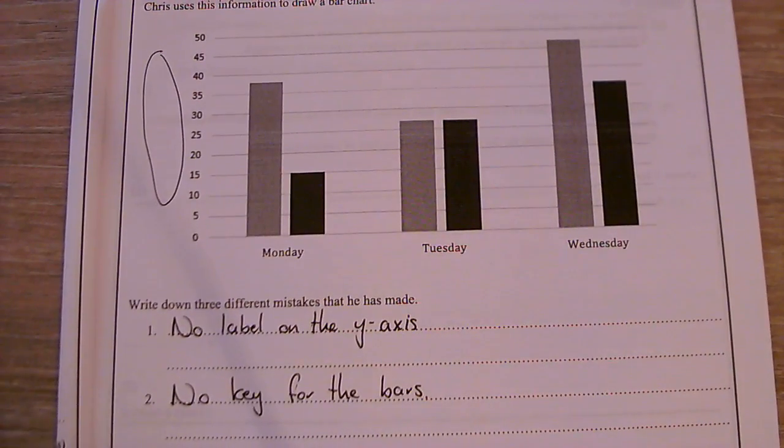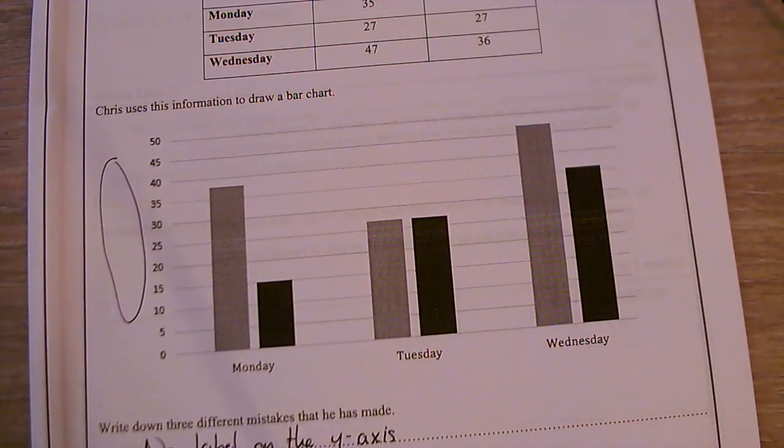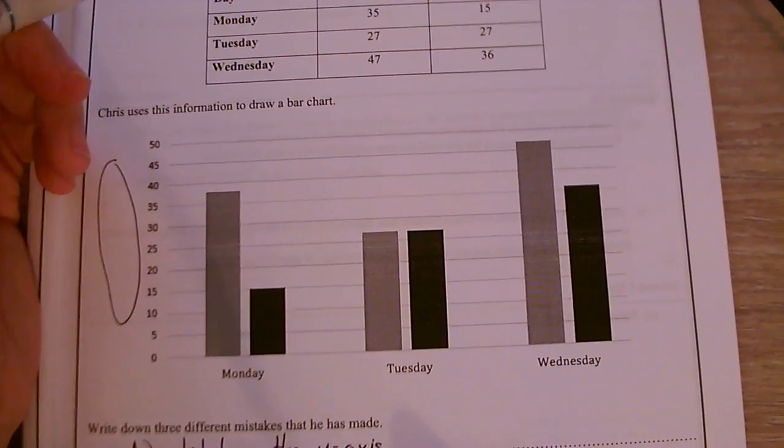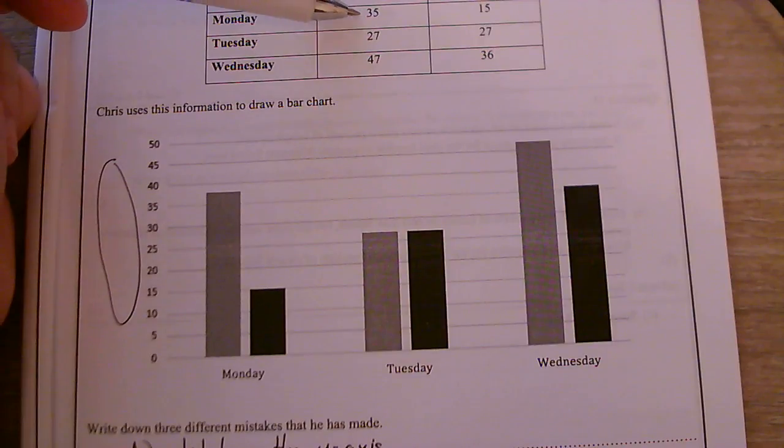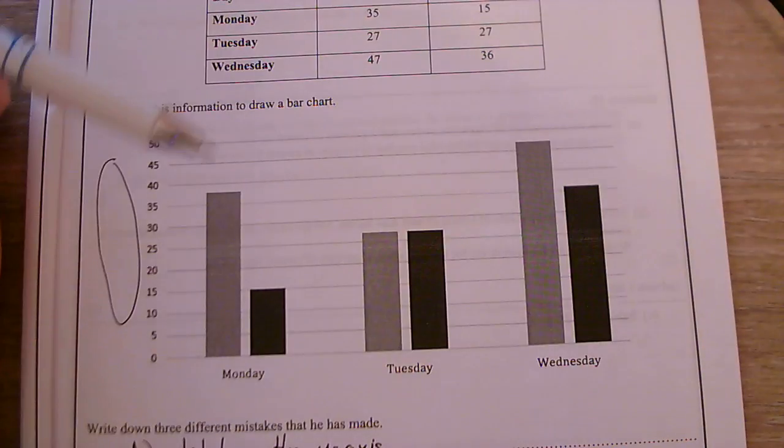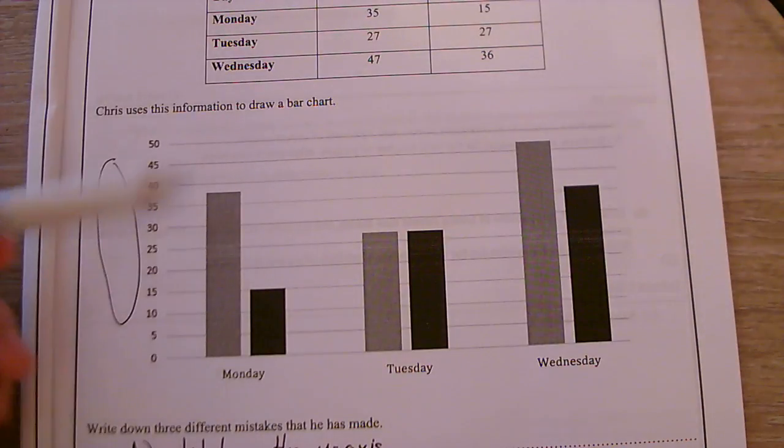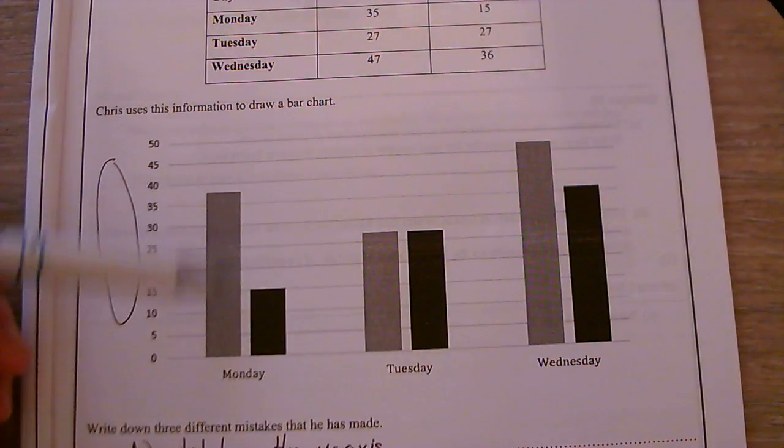Okay, and then let's just look carefully at these bars. We might find another mistake there. So on Monday the sale of food was 35 and the sale of drinks was 15. So partly because I don't know what the labels are, I'm going to assume that this was food and this one was drink.